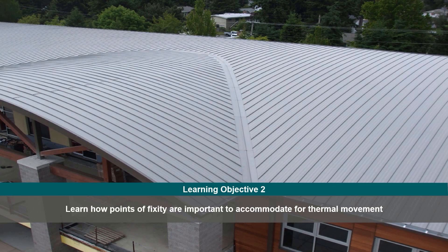Let's move to the second learning objective: how points of fixity are important to accommodate for thermal movement. There are three ways to accommodate thermal movement of a standing seam roof panel, and each way requires the establishment of a point of fixity at one location on the roof.